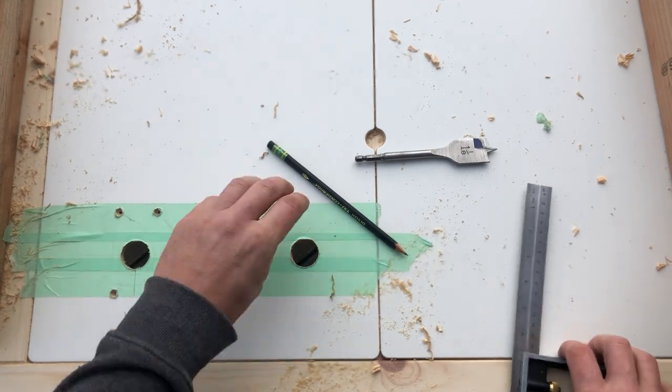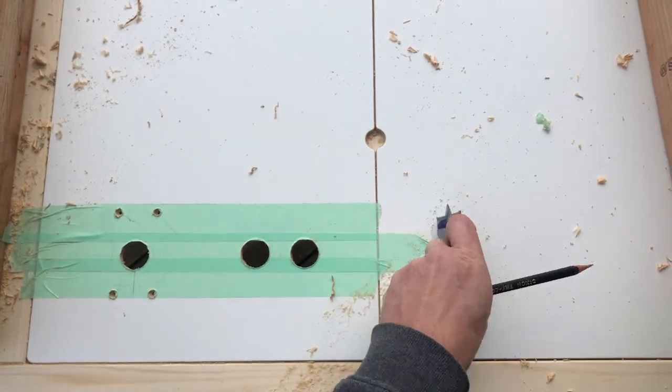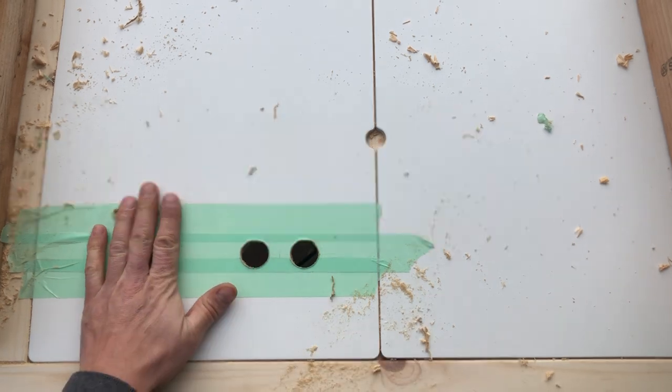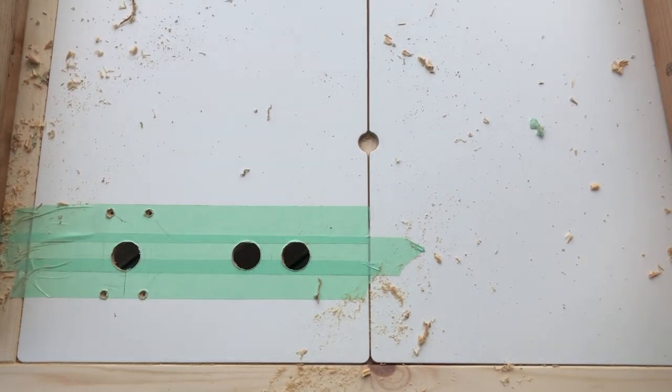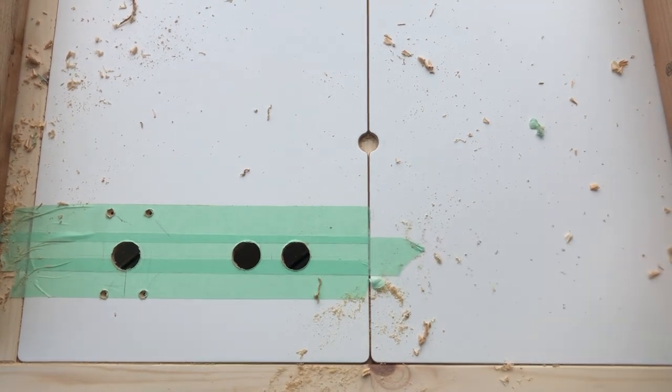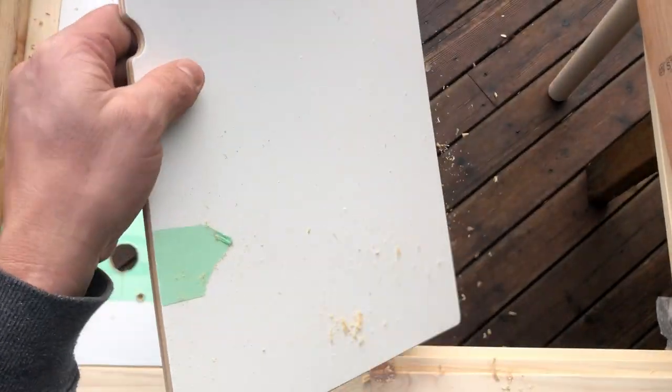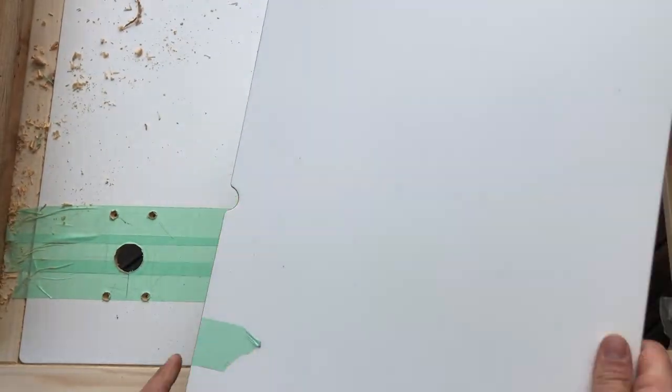There we go. Now you've done one side of your table, and to create the other side you're going to use these holes as a template. So now remove the other side of the table and lay it out on top.